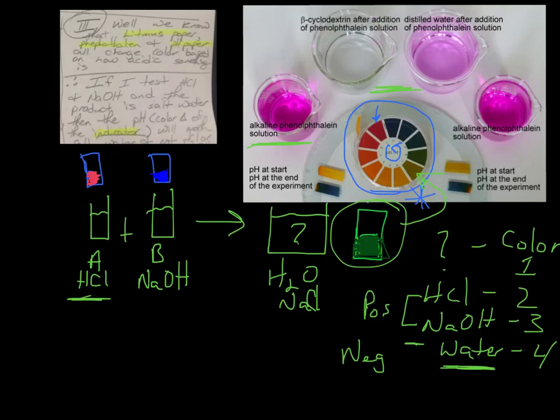Those are the three really good strategies that people came up with, along with the different control groups and the data people should be able to collect to come up with a conclusion on whether something actually reacted and whether that reaction produced water and sodium chloride. Thanks, hope this was good for you.